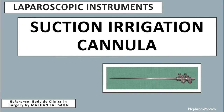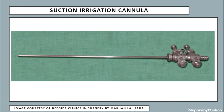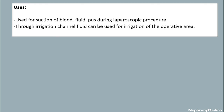Let's talk about the suction irrigation cannula, which is a laparoscopic instrument. This is a picture showing the suction irrigation cannula. Uses: it is used for suction of blood and fluid during laparoscopic procedures. Through the irrigation channel, fluid can be used for irrigation of the operative area.